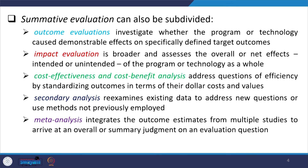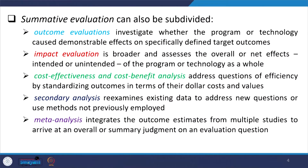Secondary analysis examines existing data to address new questions or use methods not previously employed. It gives the gaps in the existing study, and accordingly new variables or methods can be adopted. Meta-analysis, as we know, is the analysis of analyses — studies of studies. This gives multiple studies to come to a conclusion and to give a judgment about a certain value in question. Usually these days we apply meta-analysis approaches like PRISMA through literature review, from which some conclusions can also be derived for certain policies.